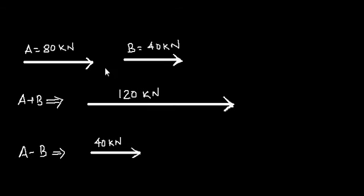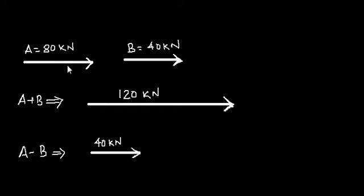And a − b gives the mathematical difference: 80 − 40 = 40 kN. The direction will be the direction of the larger vector. Because both vectors here have the same direction, the resultant direction is also the same. But if the vectors act in opposite directions but are collinear, the resultant vector will have the direction of the larger vector among the two.